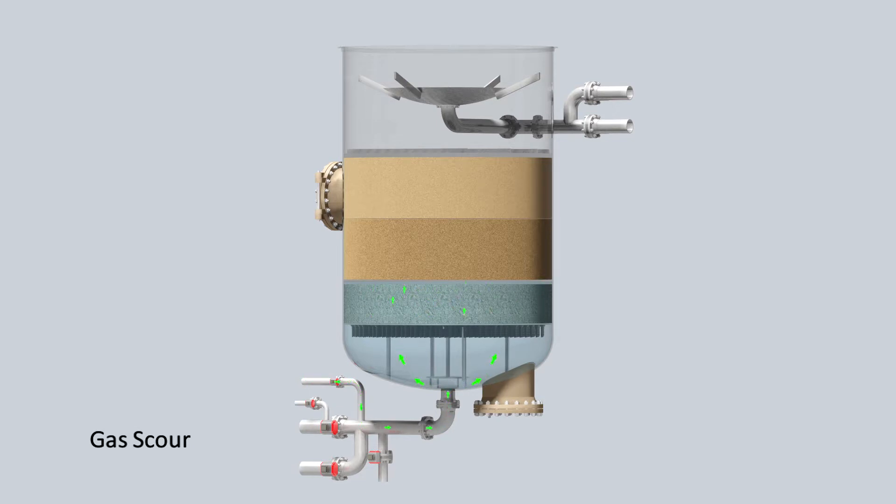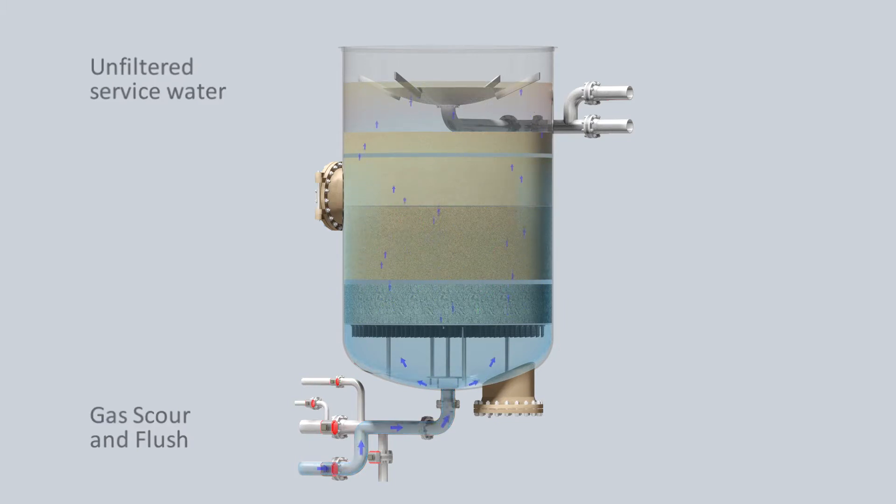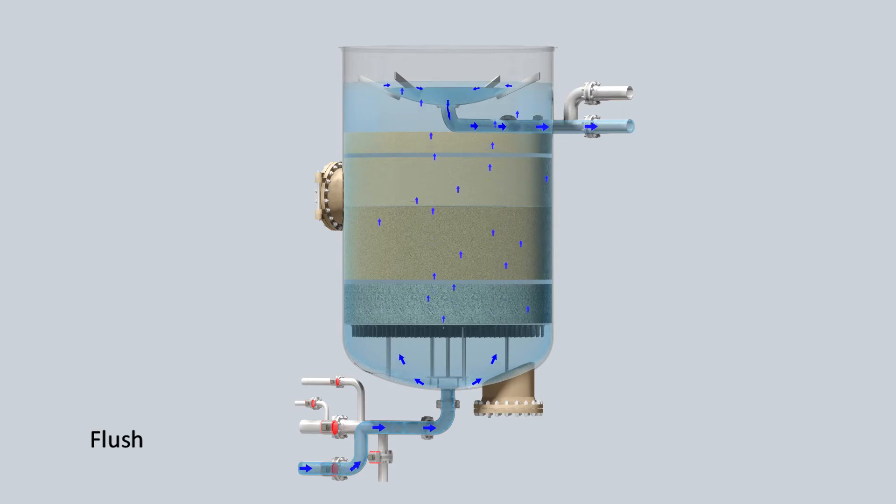The flush flow expands the media letting contaminants pass through the bed and out of the filter as a waste stream to be further treated. Upon completion of the first flush cycle, the filter repeats the same cycle a second time to ensure thorough cleaning of the media.